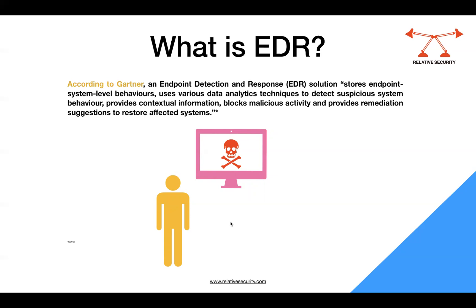Moving further, we have another solution called EDR. According to Gartner, EDR is a solution that stores endpoint system-level behaviors, uses various data analytics techniques to detect suspicious system behavior, provides contextual information, blocks malicious activity, and provides remediation suggestions to restore affected systems. When you read this definition you see there are many more functionalities associated with EDR than with EPP or antivirus. Antivirus just looks at signatures and structure; EPP looks at the techniques associated with a binary's execution.